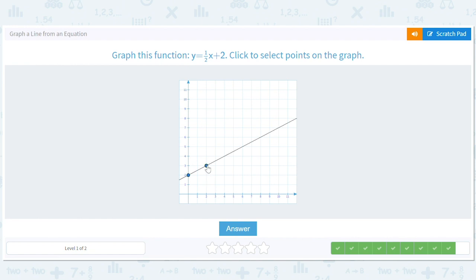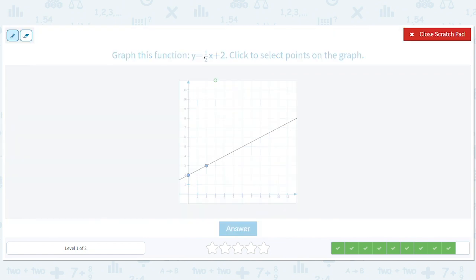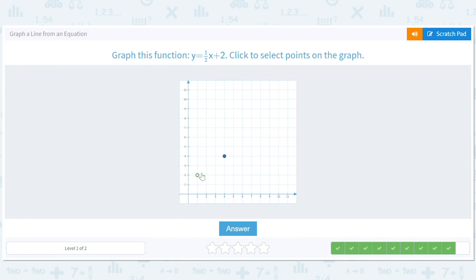But another thing we could have done is we could have plugged in, say, four in for x. If we plugged in four for x, then we get y equals one half times four is two. So we get two plus two, which would equal four. So that means four, four should be a point on this graph. So we could also just pick that as another point and use that and say zero, two, we get the same line. It's kind of cool. No matter what point you pick on here, it'll satisfy this equation.